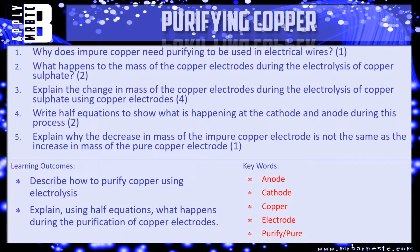Let's see how much you've picked up from that short video then. So question one says, why does impure copper need purifying to be used in electrical wires? Think back to what electrical wires are used for and therefore why do you not want impurities in there? Question two, what happens to the mass of copper electrodes during the electrolysis of copper sulfate? What happens at the cathode? What happens at the anode? Do they increase or decrease?